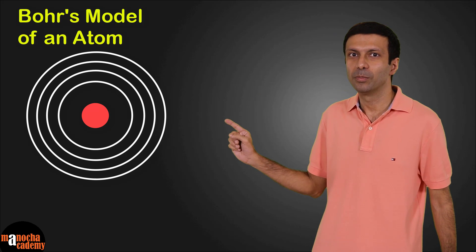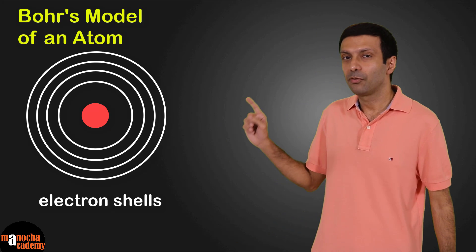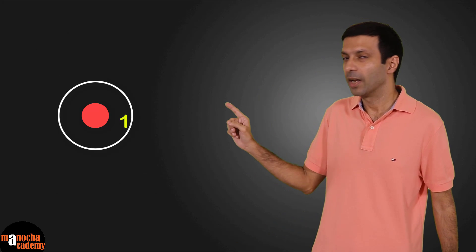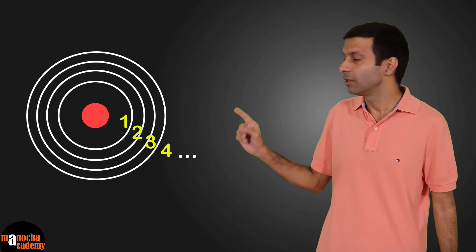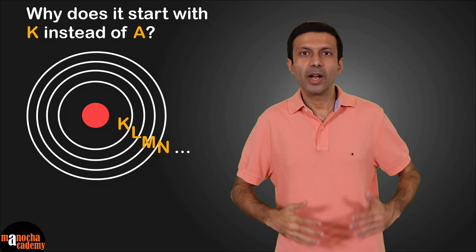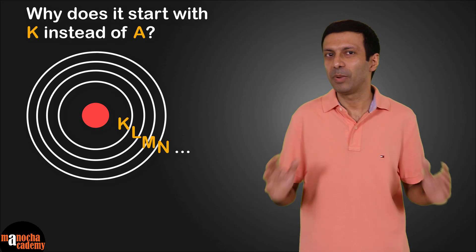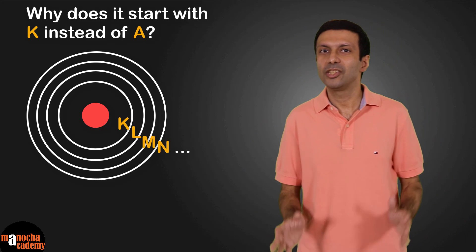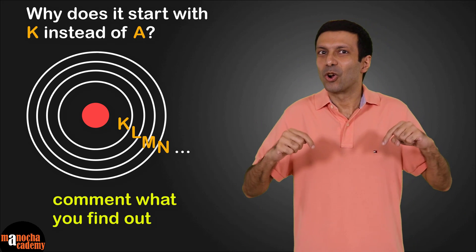The fixed orbits in an atom are known as electron shells. The shells are numbered starting from the innermost shell. So it's 1, 2, 3, 4 and so on. Or they are labeled using letters starting with the letter K. So it's K, L, M, N and so on. Now you may be wondering, why do they start with the letter K? Why is it not A? Well there's an interesting story behind this. I would encourage you to find it yourself and do let me know what you found by putting it in the comments below.